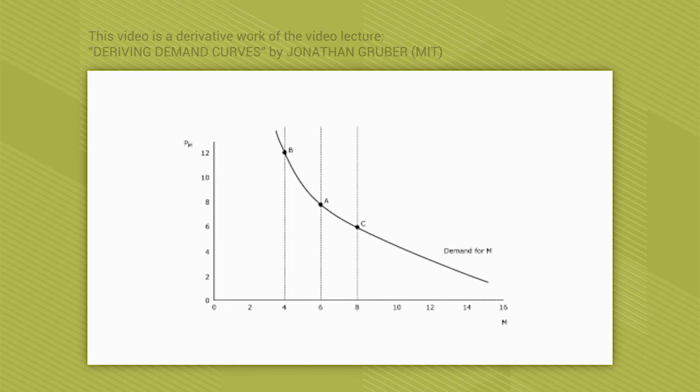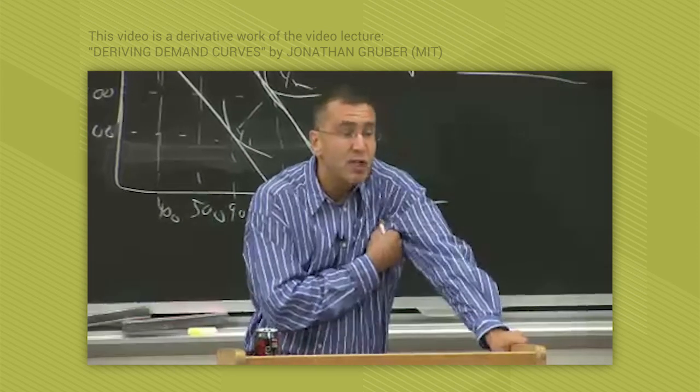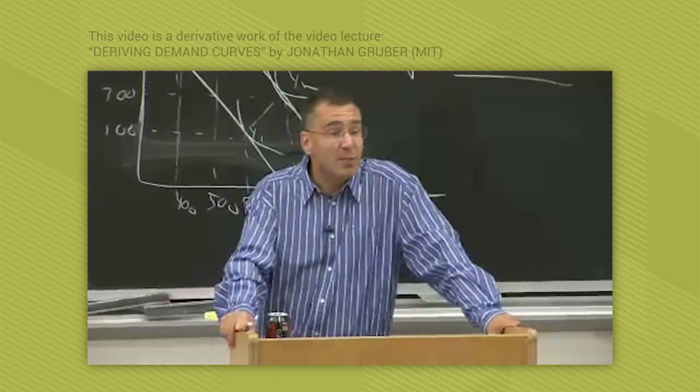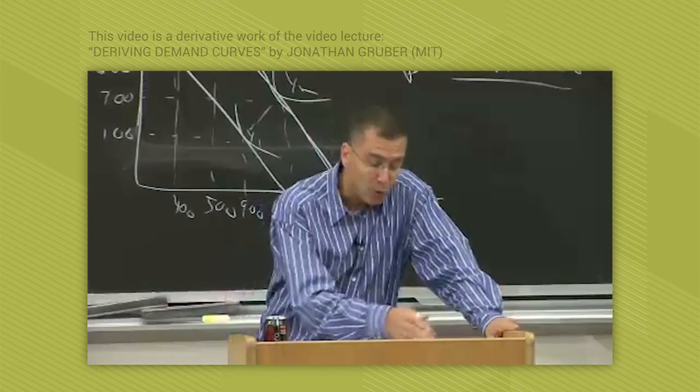They just come from constrained utility maximization. You just take your utility function, you maximize it given the budget constraint in place, and boom, you have a demand curve.